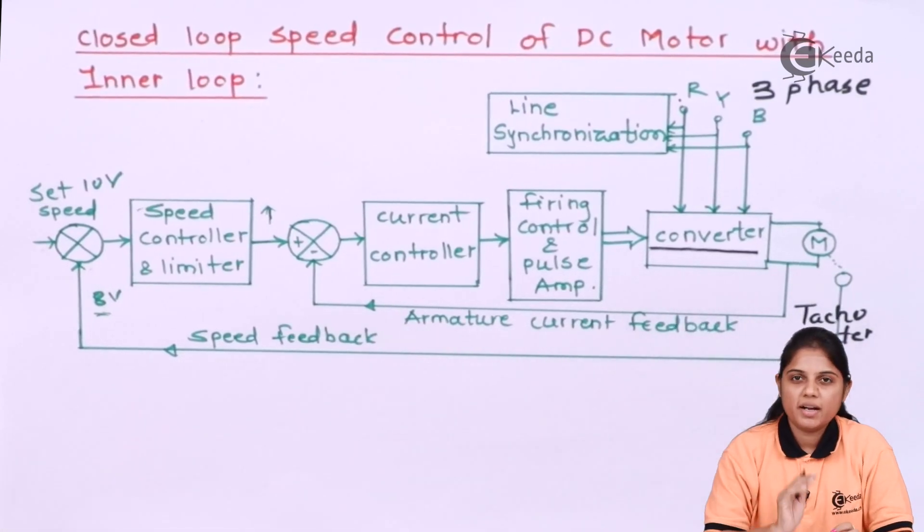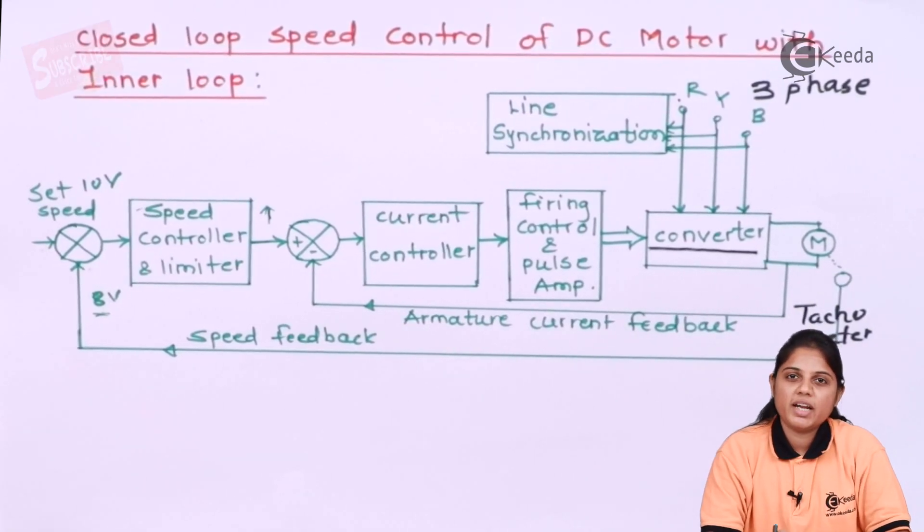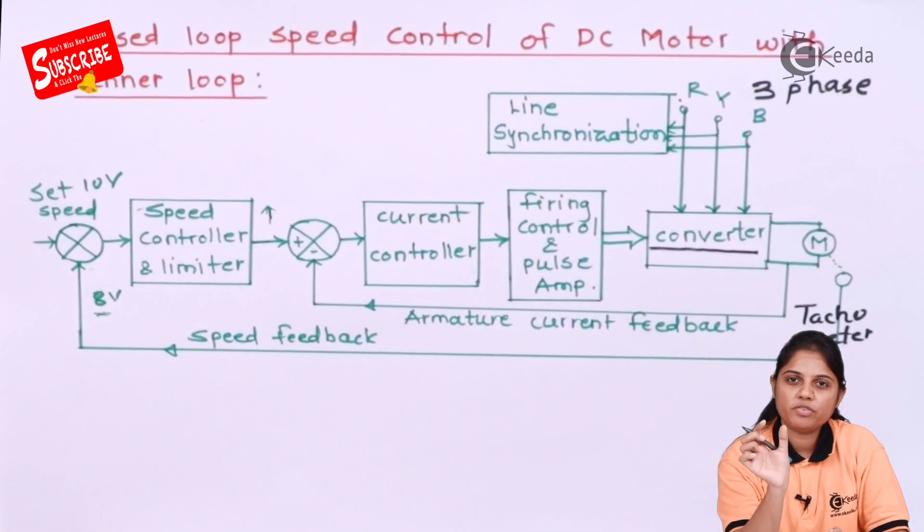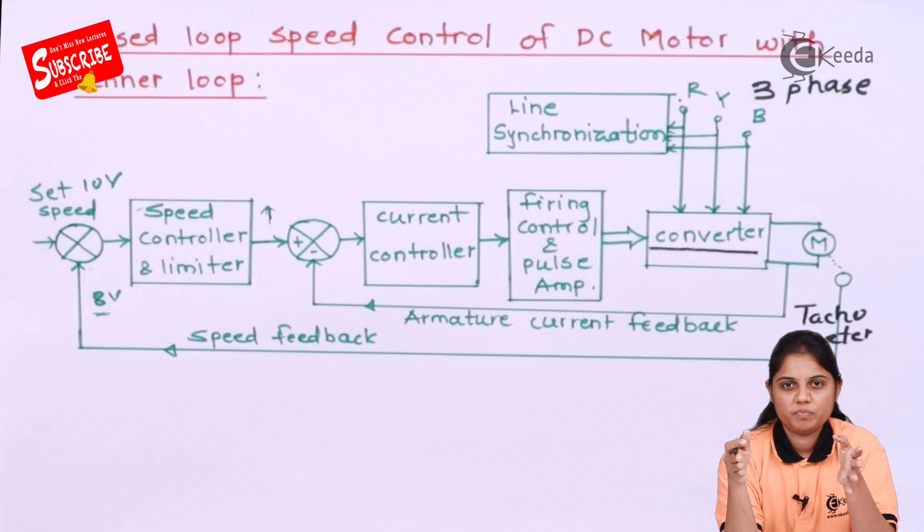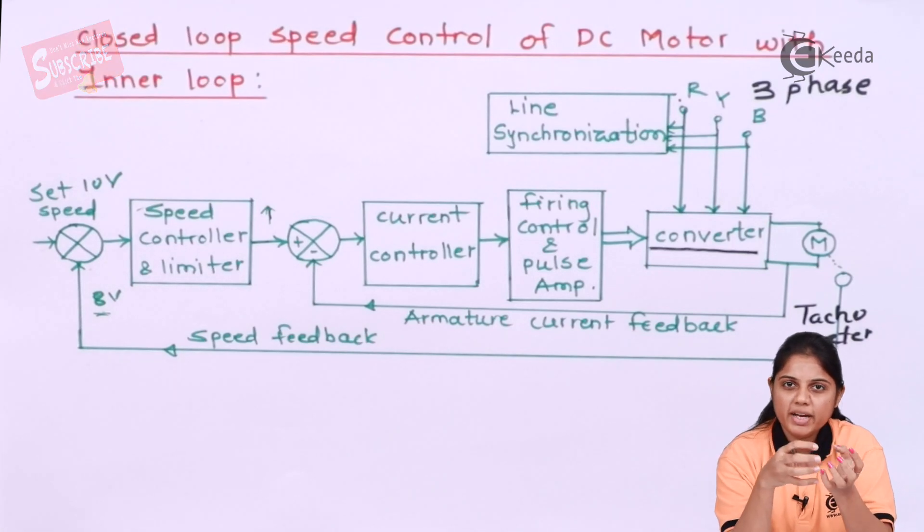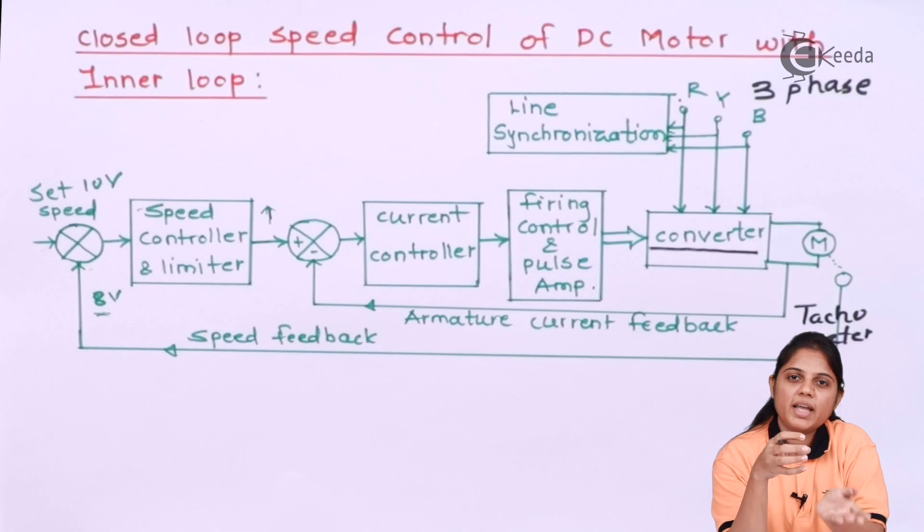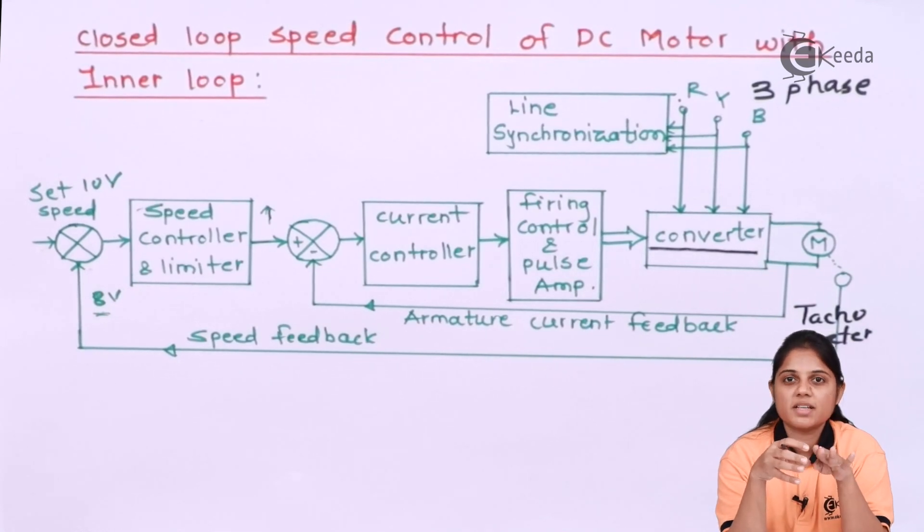Now till then, after connecting load, after some point of time, your speed will come back to its desired level. Because when you connected a load, it goes down to 8 volts. But after some time, it will again come to its original level that is 10 volts.